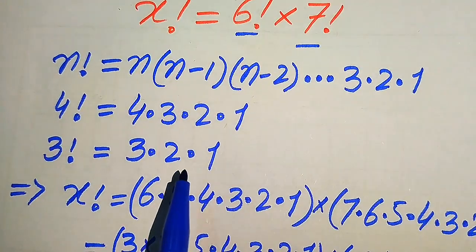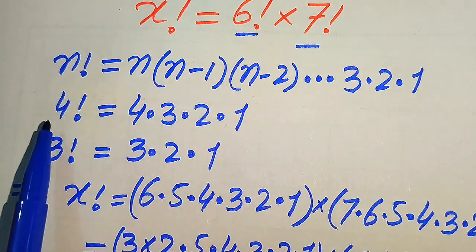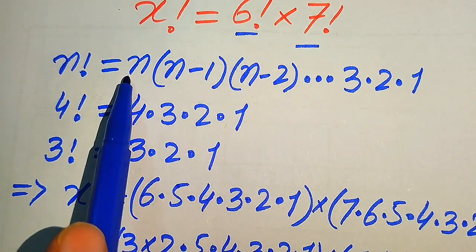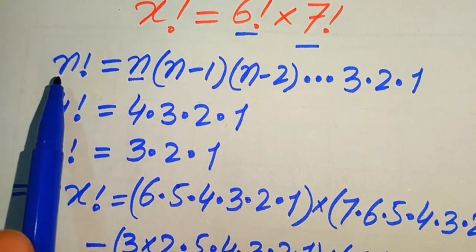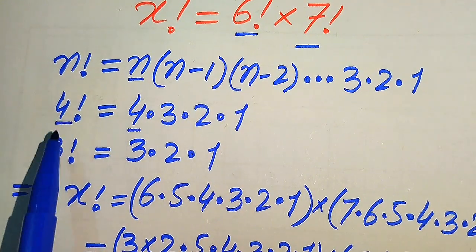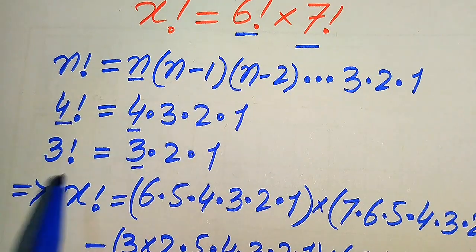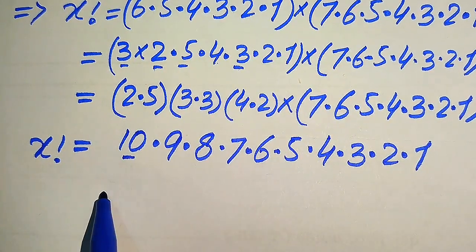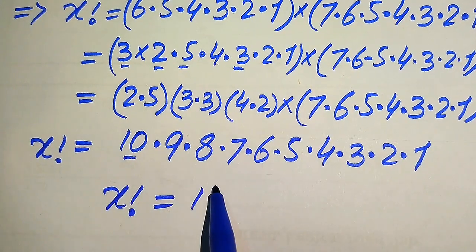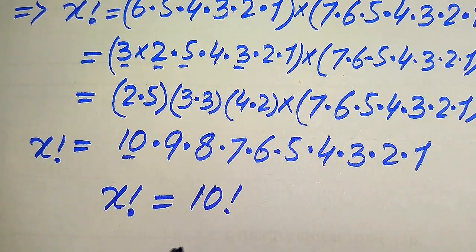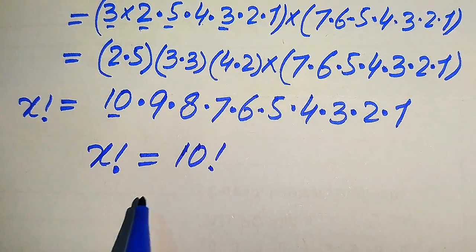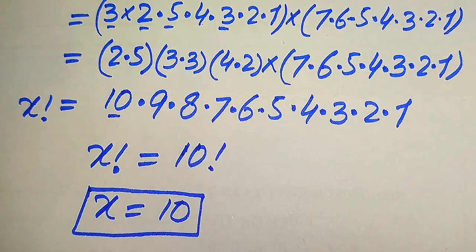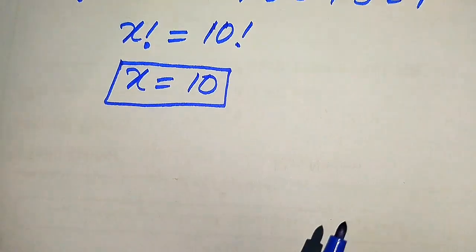If you have 4, 3, 2, 1 this is 4 factorial. If you have n, n minus 1, n minus 2, and so on down to 1, this is n factorial, meaning the first number is the factorial value. So if the factorial starts from 3, it is 3 factorial. Here the sequence starts from 10, so this becomes 10 factorial. Comparing both sides, we get x equals 10 as our answer.